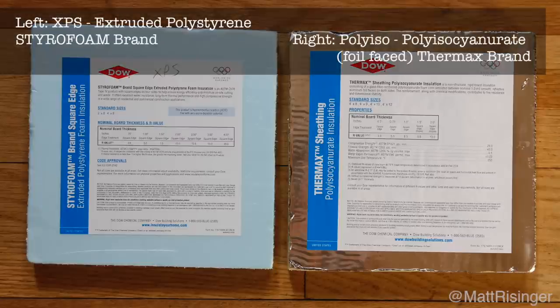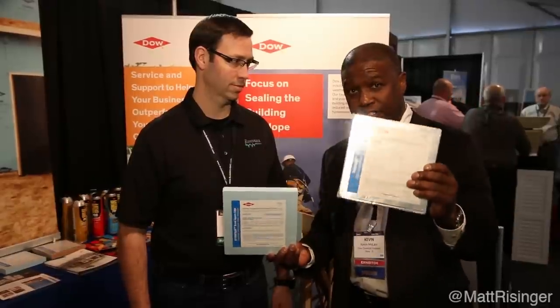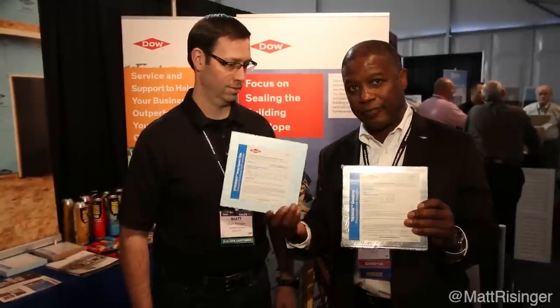Yes. First, this product we call a polyisocyanurate foam sheathing. This next one we call an extruded polystyrene foam sheathing. The primary differences in the two is in the chemistry of how they're made. The polyisocyanurate is from the urethane family. This one is from the polystyrene family.